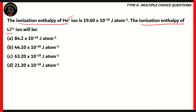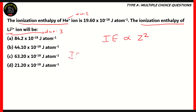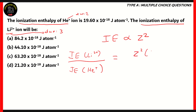What we do know is that helium has an atomic number of 2, and lithium has an atomic number of 3. How is ionization enthalpy of an element related to its atomic number? Ionization enthalpy is directly proportional to the square of the atomic number.